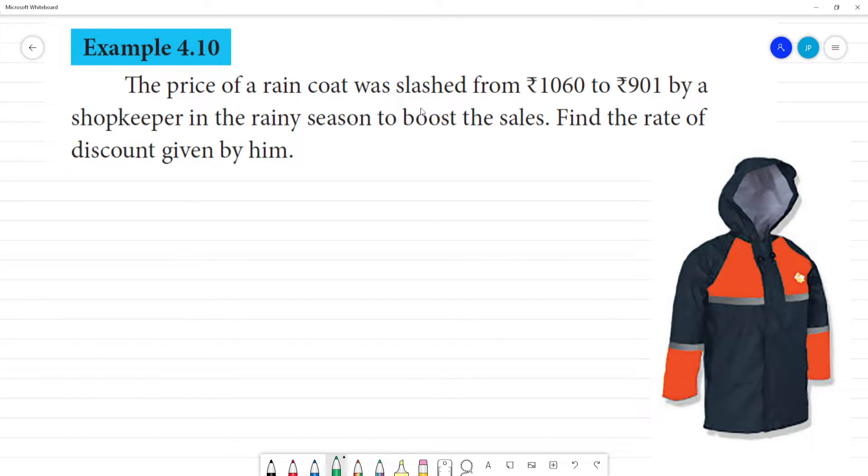The price of a raincoat was slashed from 1060 to 901 by the shopkeeper in the rainy season to boost the sales. Find the rate of the discount given by him.